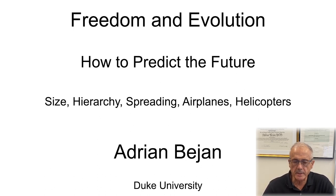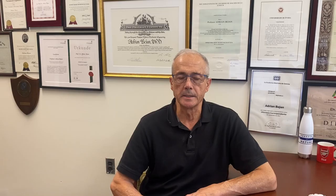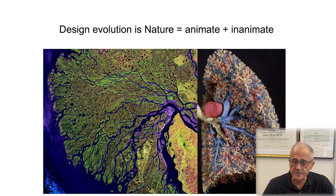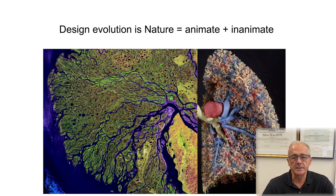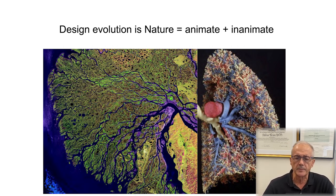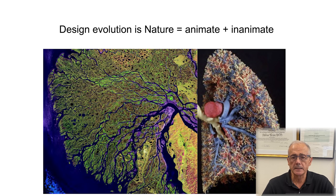The law is a simple summary of a distinct phenomenon — a distinct phenomenon just like what you see on this screen, an observation that repeats itself the same way in the billions. This image, which is the same in the river delta and in the human lung, is present in many other places. One belongs in geophysics, the other in biology, meaning the image is both animate and inanimate and represents all nature.